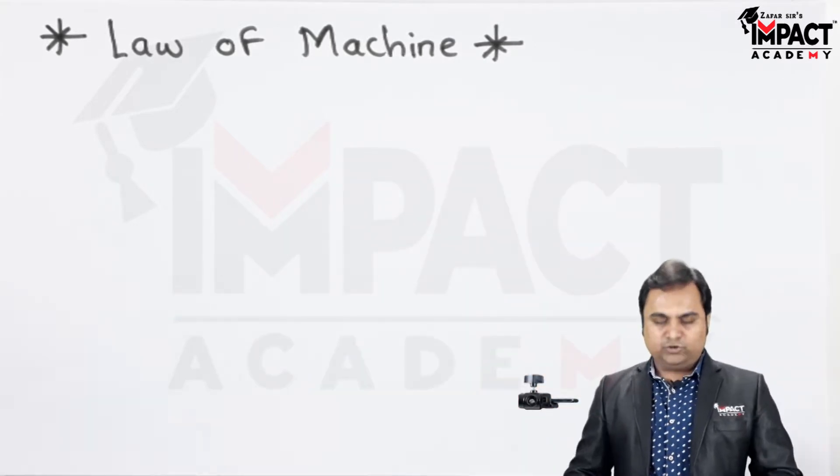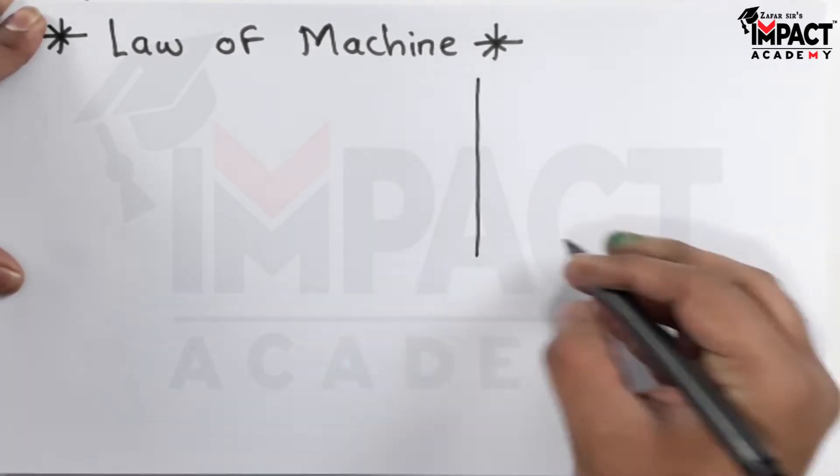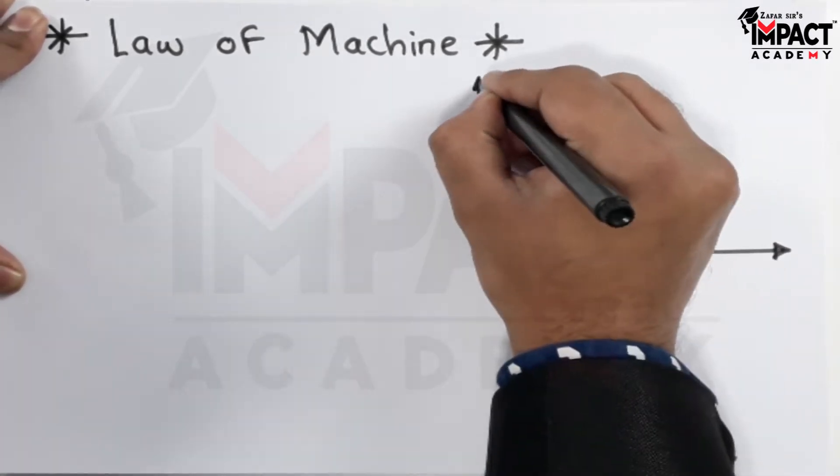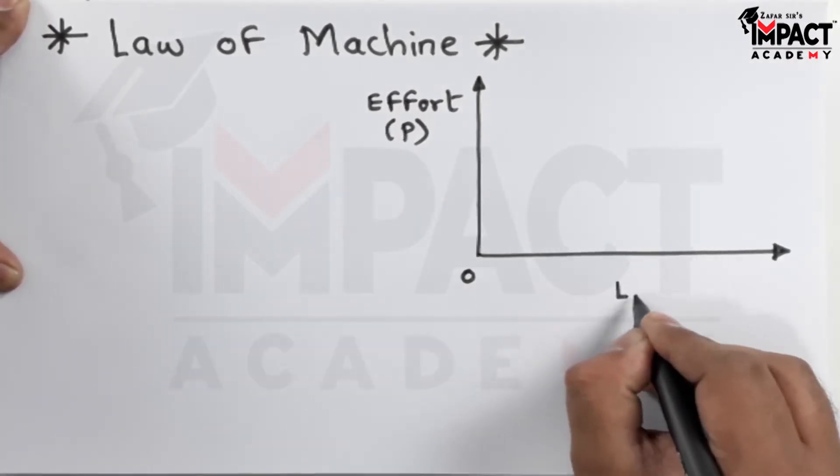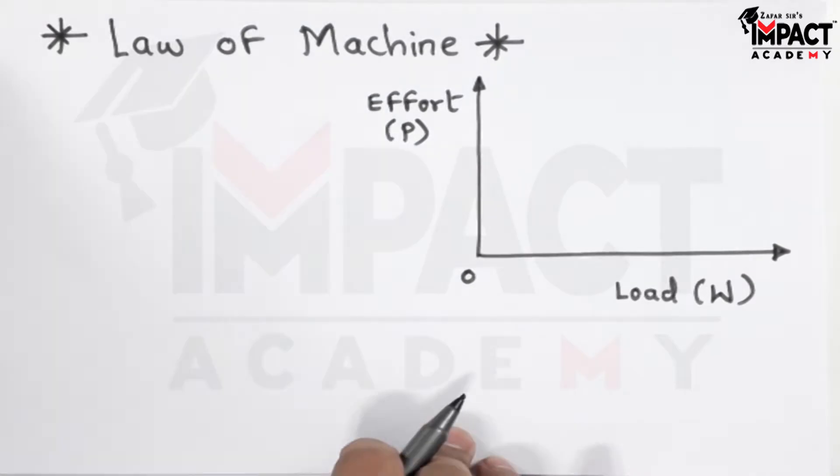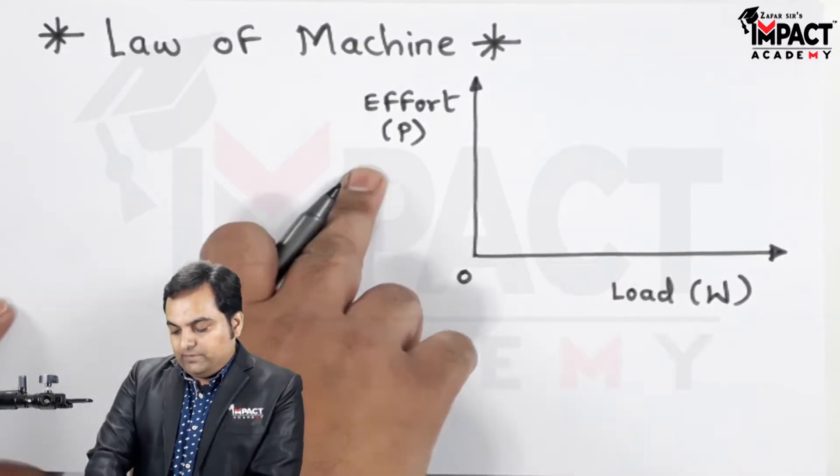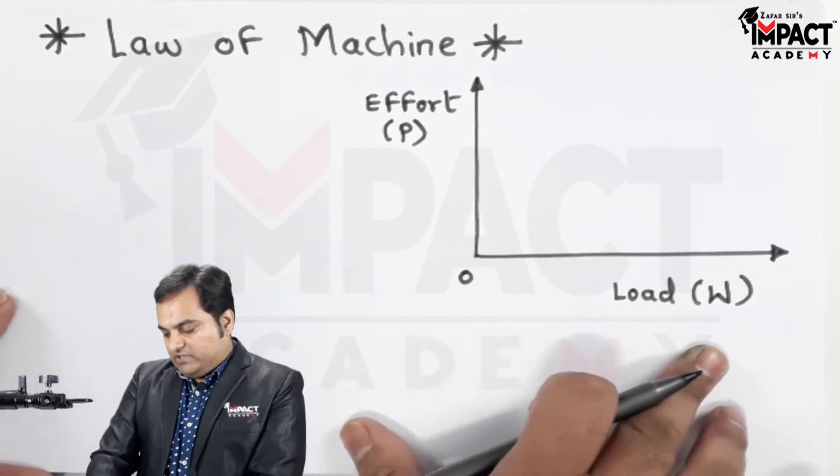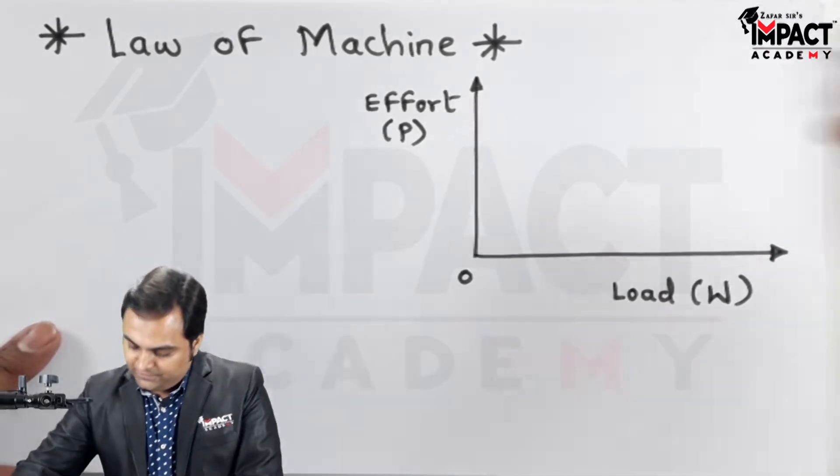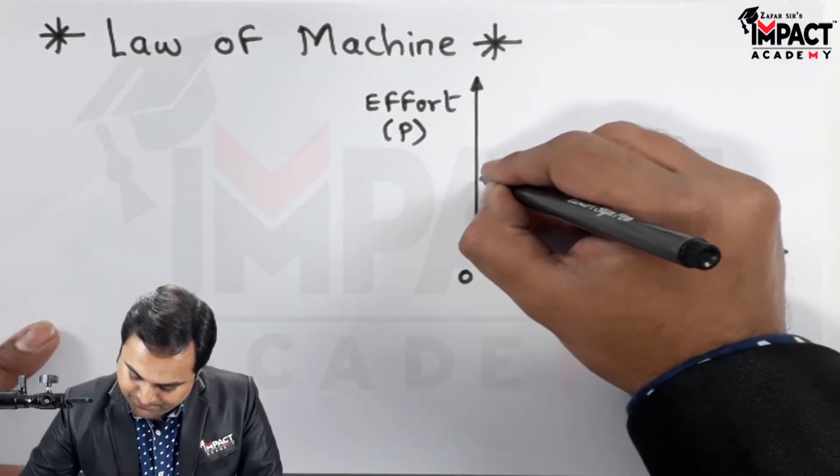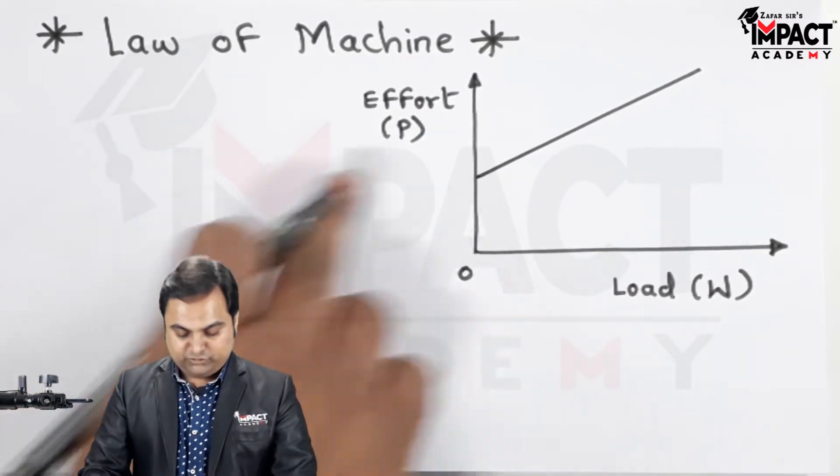I would be plotting a graph between effort versus load. P is the effort which we are applying, whereas W is the amount of load which we want to lift with the help of a simple machine. Here there is a line which is cutting this y-axis at this location.